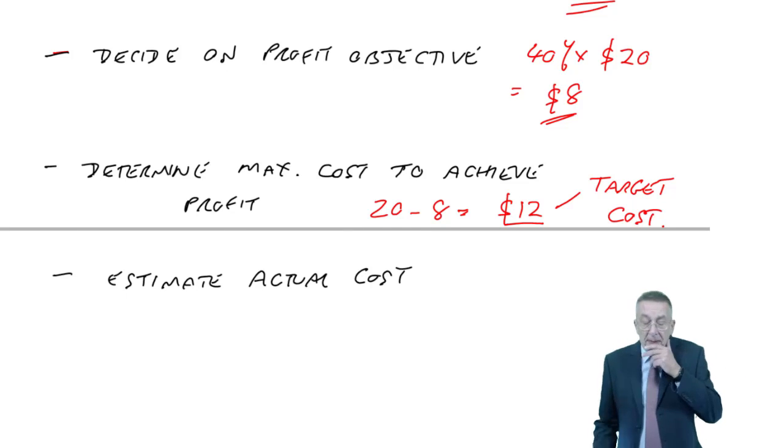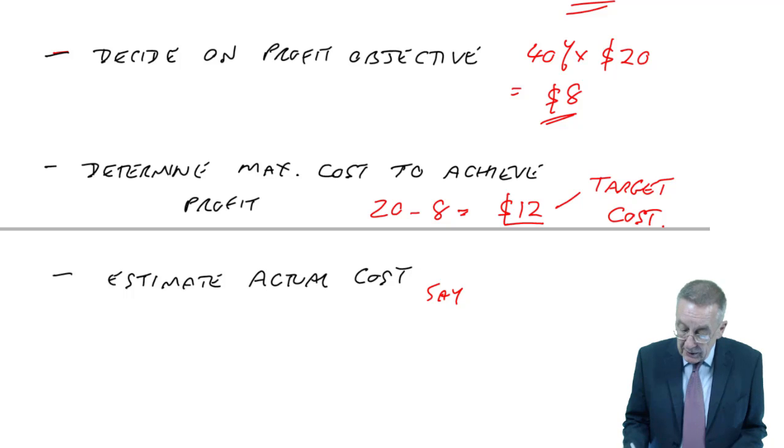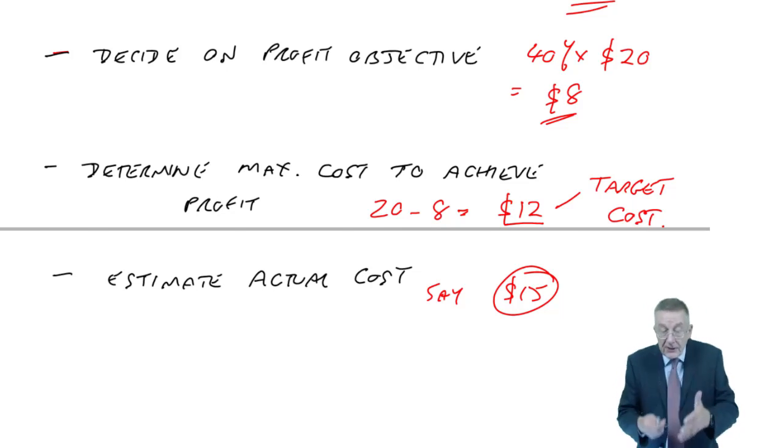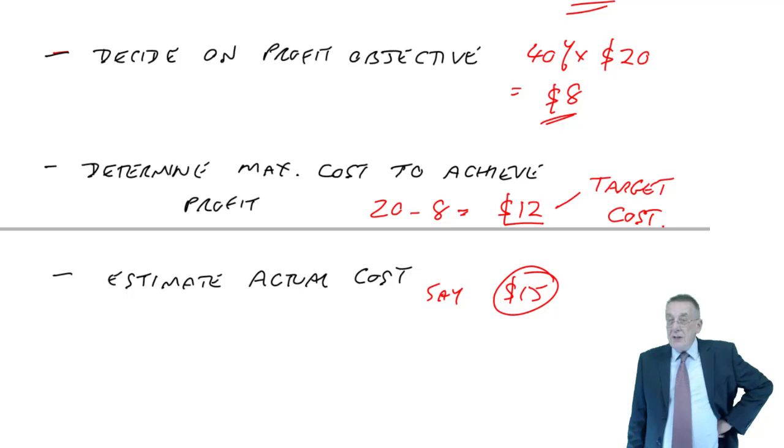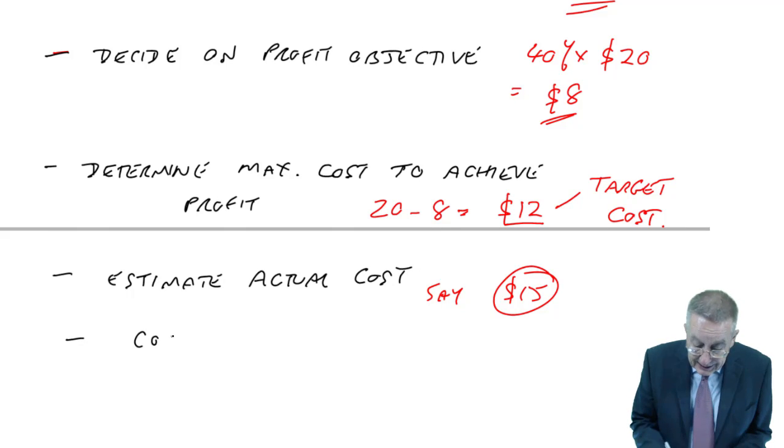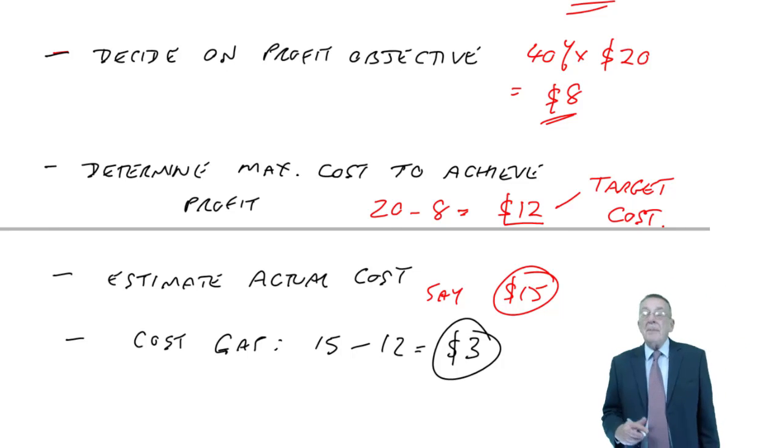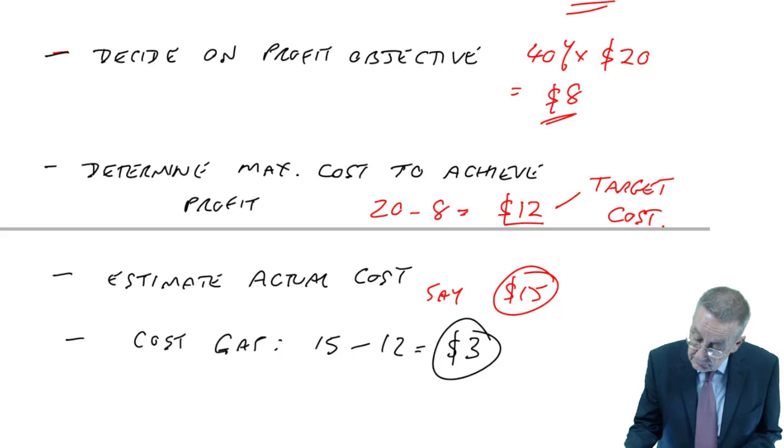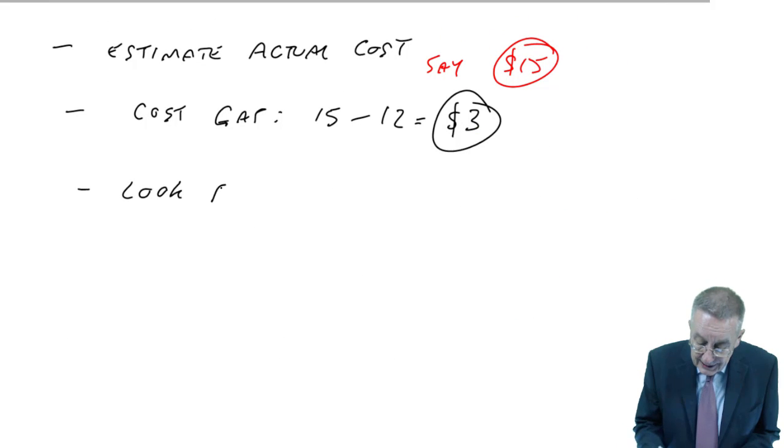And so what we then do is calculate or estimate the actual cost. We do our costings. Maybe we'll use activity-based costing as I went through in the previous lecture. But we do our costings and estimate what the cost per unit is going to be. If it's less than $12, great, we can go ahead. We'll make the profit we want. No problem. But suppose it's higher. Suppose I'm going to estimate the actual cost, and suppose I get $15. I invented that figure just to explain how we use target costing. So I reckon it's going to cost $15. Well, what are we going to do? It's costing more than it should have done. We say that we've got a cost gap.